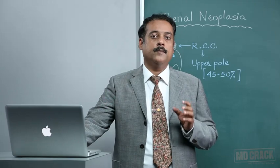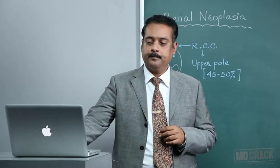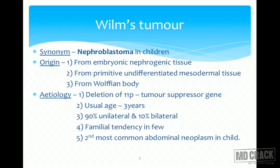Another name for Wilms Tumor is Nephroblastoma. Regarding its origin, it originates from embryonic nephrogenic tissue — specifically from primitive undifferentiated mesodermal tissue — and also originates from the Wolffian body. That is why it is called Nephroblastoma.